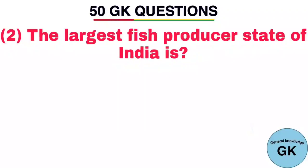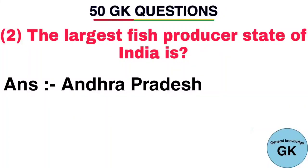Question number 2. The largest fish producing state of India is. Answer: Andhra Pradesh.